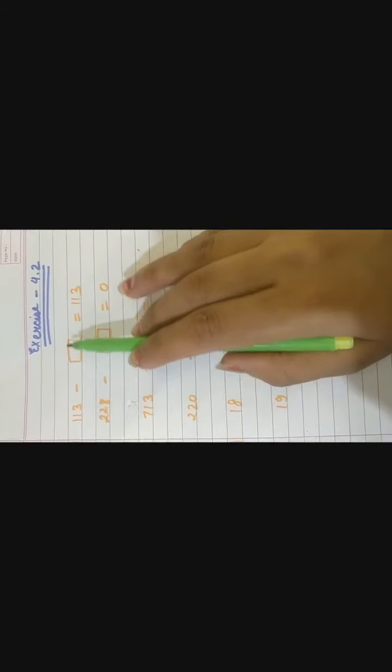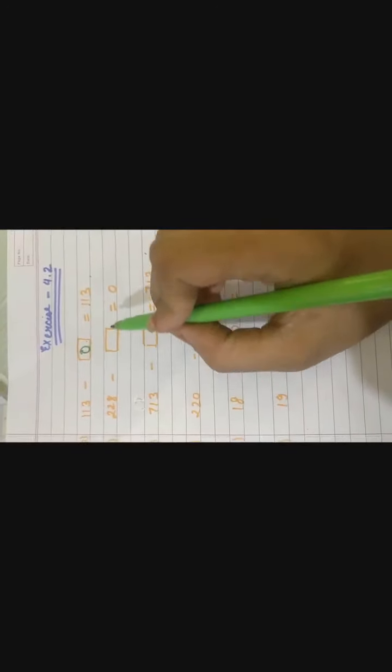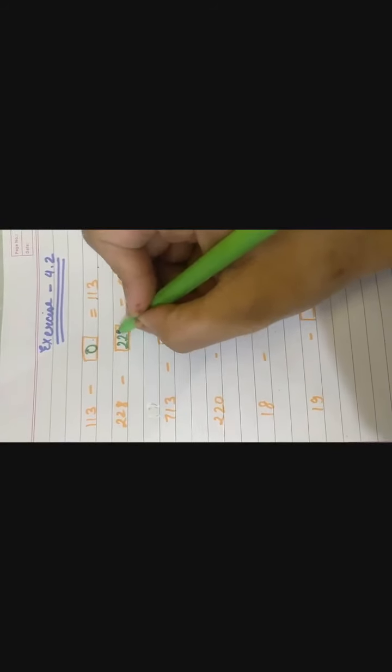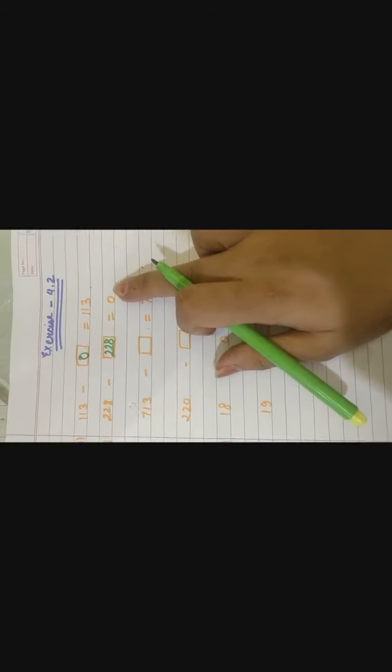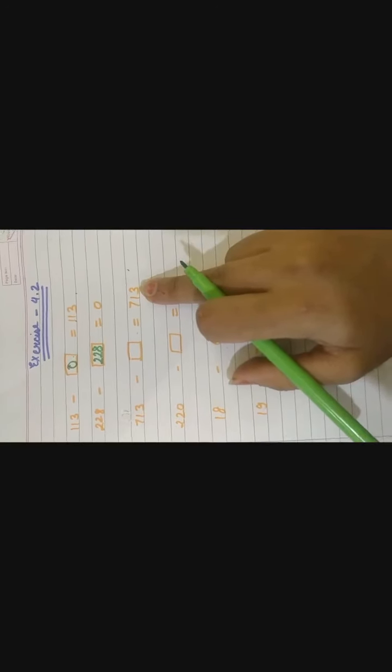Exercise 4.2. So 113 minus dash is equal to 113. Ab hum isme se kya minus karenge ki jo humare paas same bache? 0 minus karenge. Hume 0 minus karenge, hume kuch nahi diya, tabhi humare paas same bacha hai. 228 minus 228 is equal to 0. We didn't have anything left. So the answer will be 0. Good. 713 minus 713. Same. So 713 minus 0 is equal to 713.